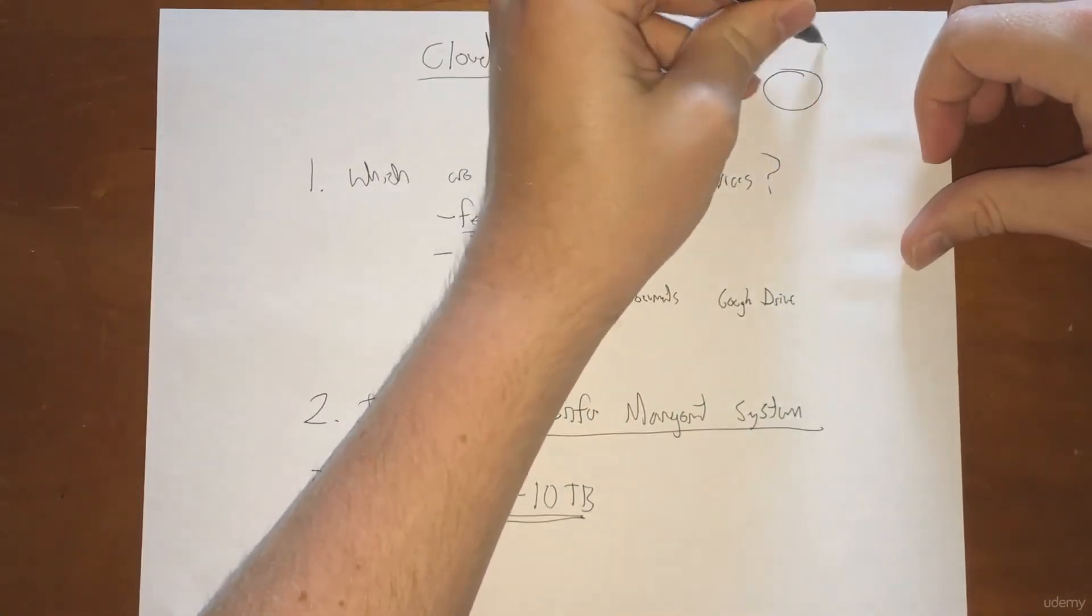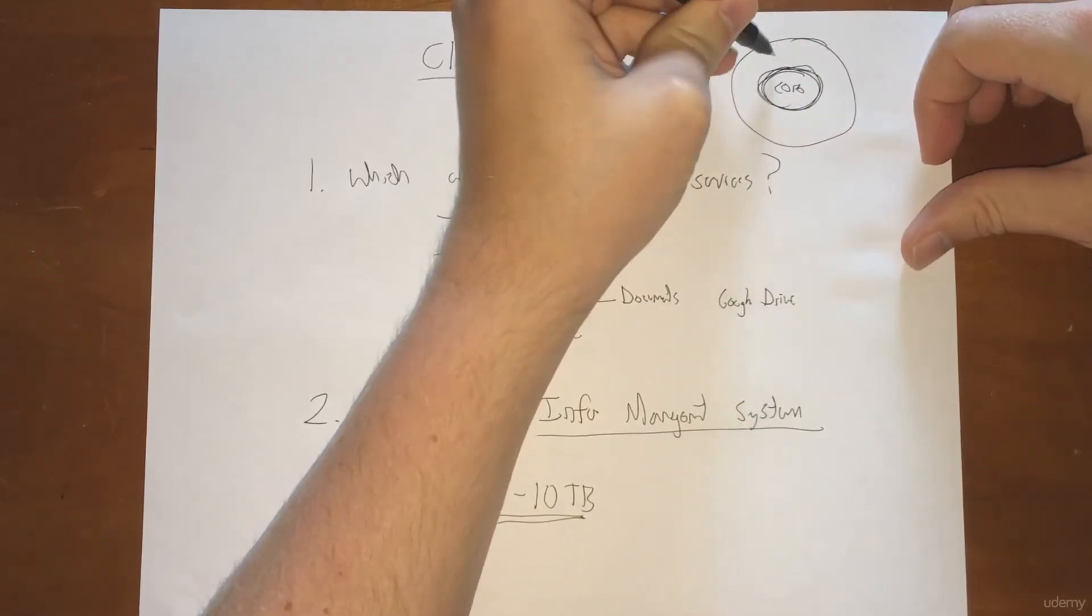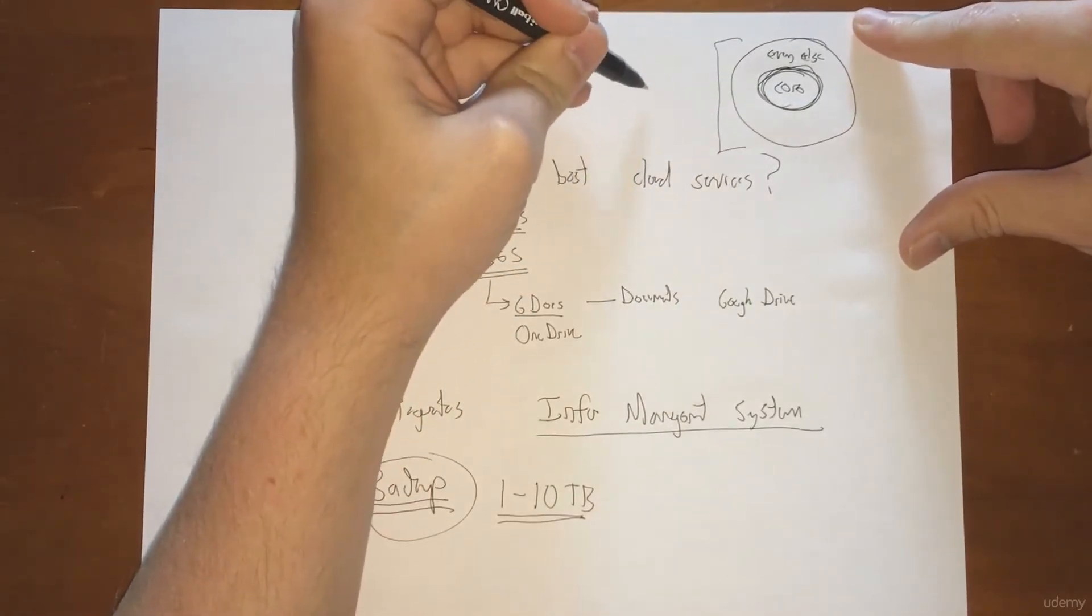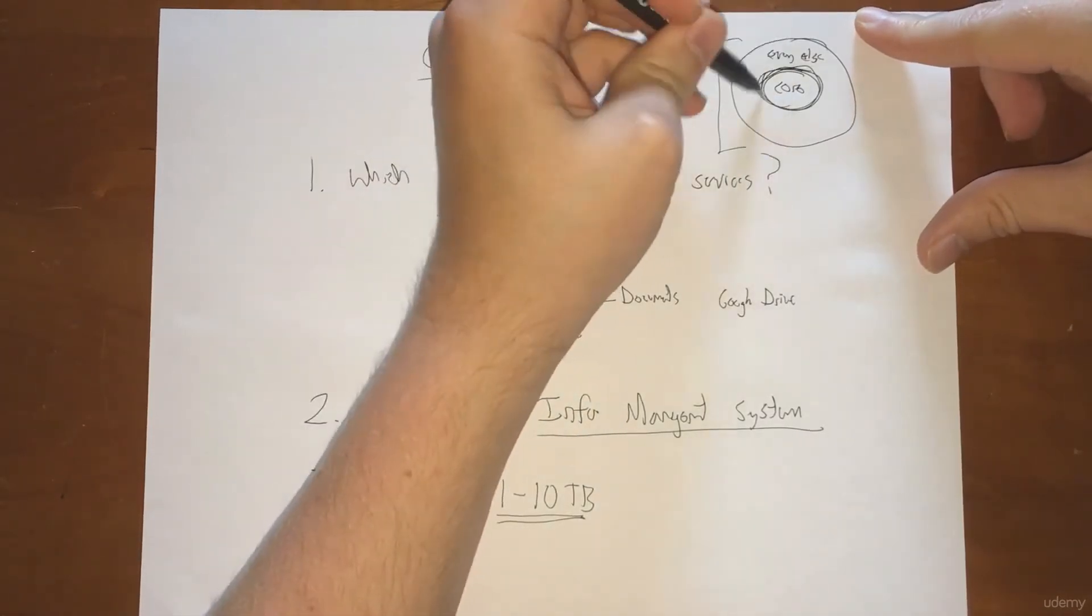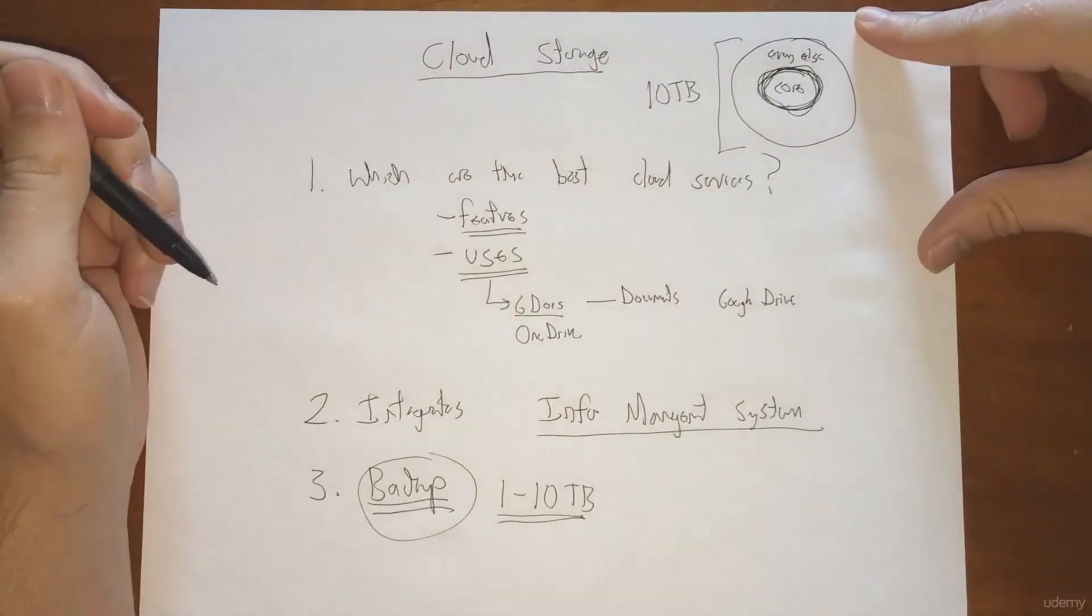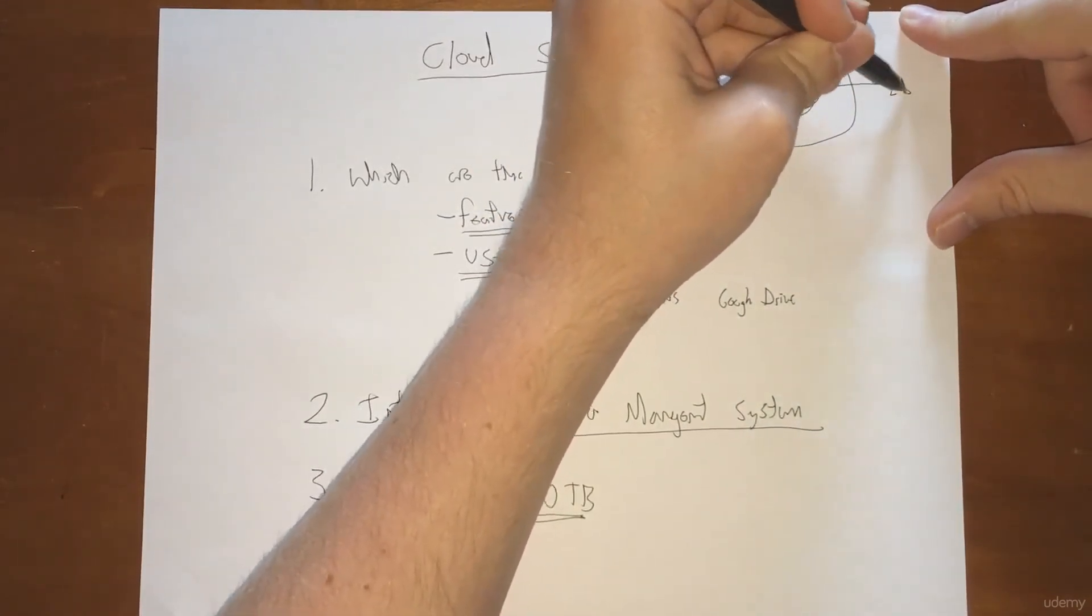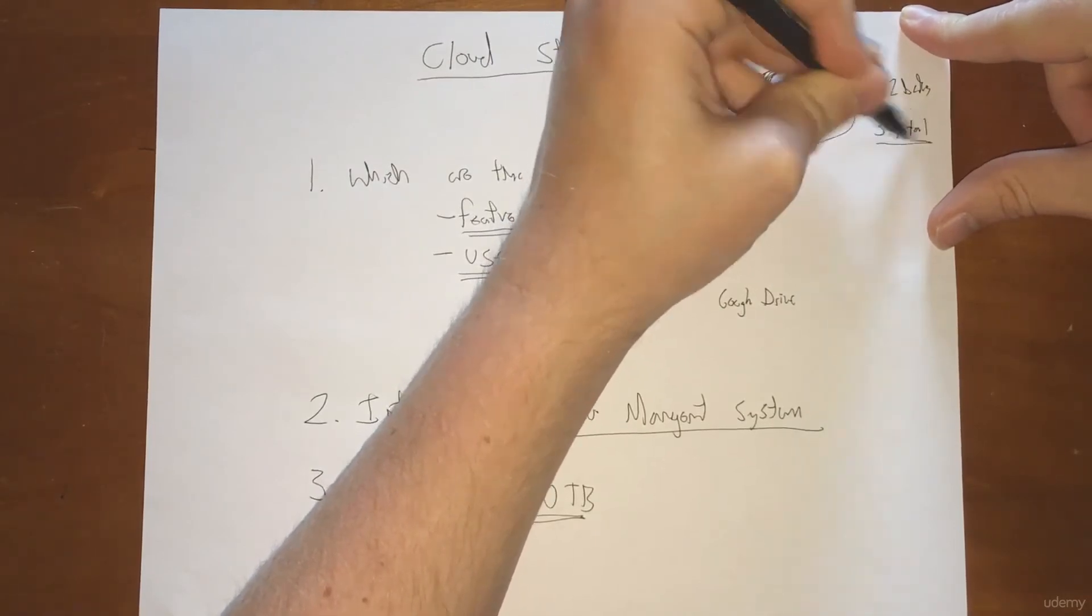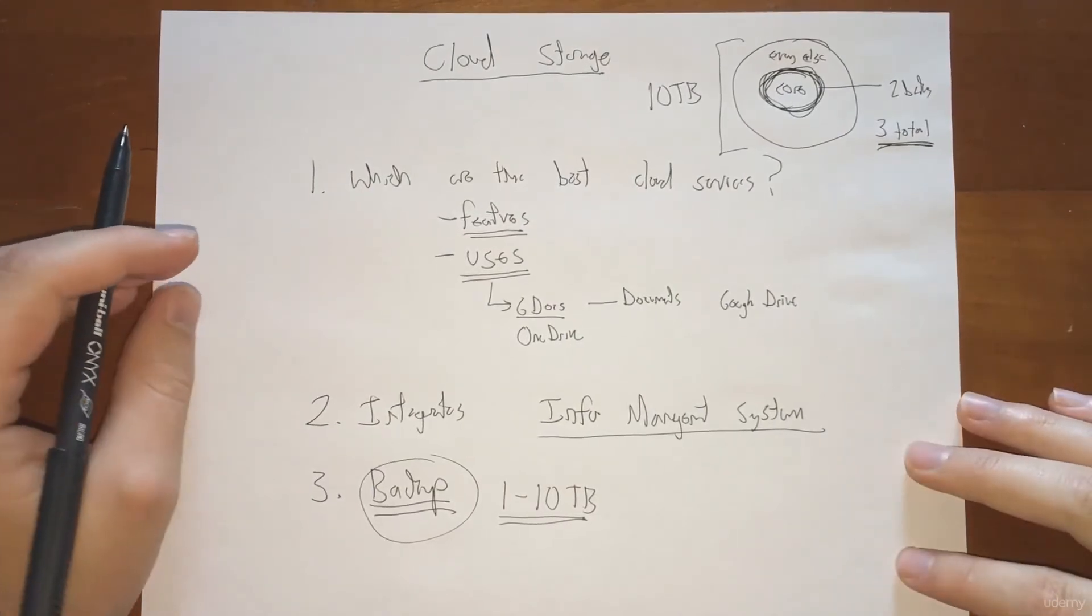You can think of your files as core files that are really critical and then everything else. For most of you, all of this will fit within that 10 terabytes, and so you can back up both. But it's really critical that you're keeping at least one backup and ideally two backups. You really want to have three total of everything. This allows you to do that and think about how you're going to do it and do it pretty cheaply.